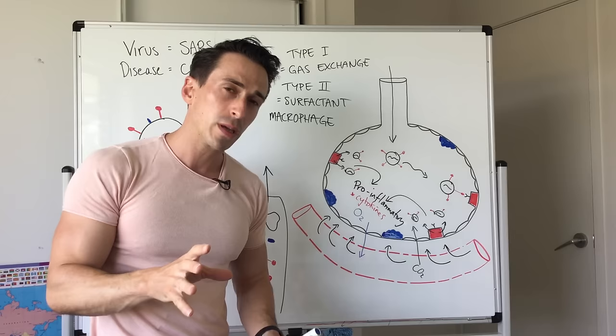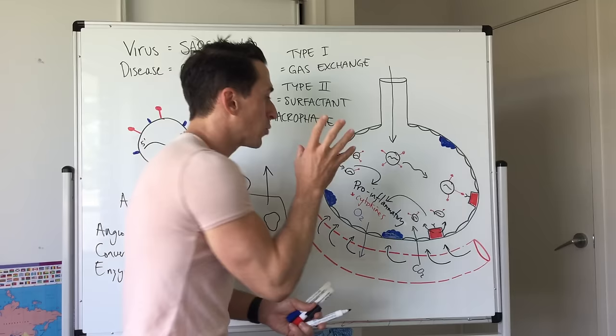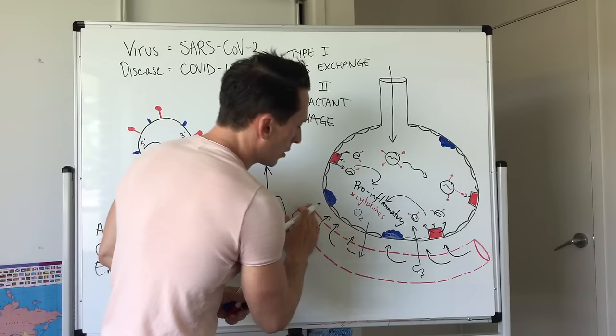There's now fluid here and this fluid is stopping this gas exchange. Now this can be acute respiratory distress syndrome and this is very very bad. This is when individuals may need to go on ventilators for example. The other thing is that in addition to making this permeable, the blood vessel gets wider and more blood comes in which makes it worse and worse.